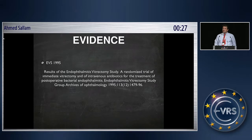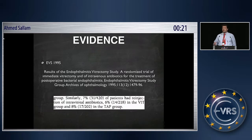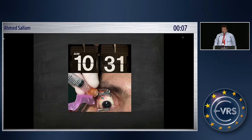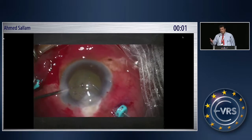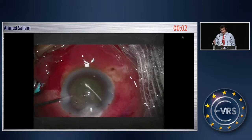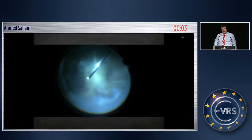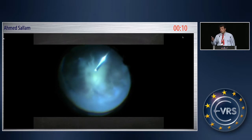The evidence: in the 1995 EVS, the number of patients who were re-injected — whether they had vitrectomy or tap — was very small, only 7%. That means most eyes become sterile after one injection. To act quickly, vitreous tap and inject is the approach. If doing vitrectomy and needing to remove the lens, I would remove the capsule. My tips on vitrectomy: be conservative, try to peel the hyaloid, but be wary — you don't want to end up with a break.